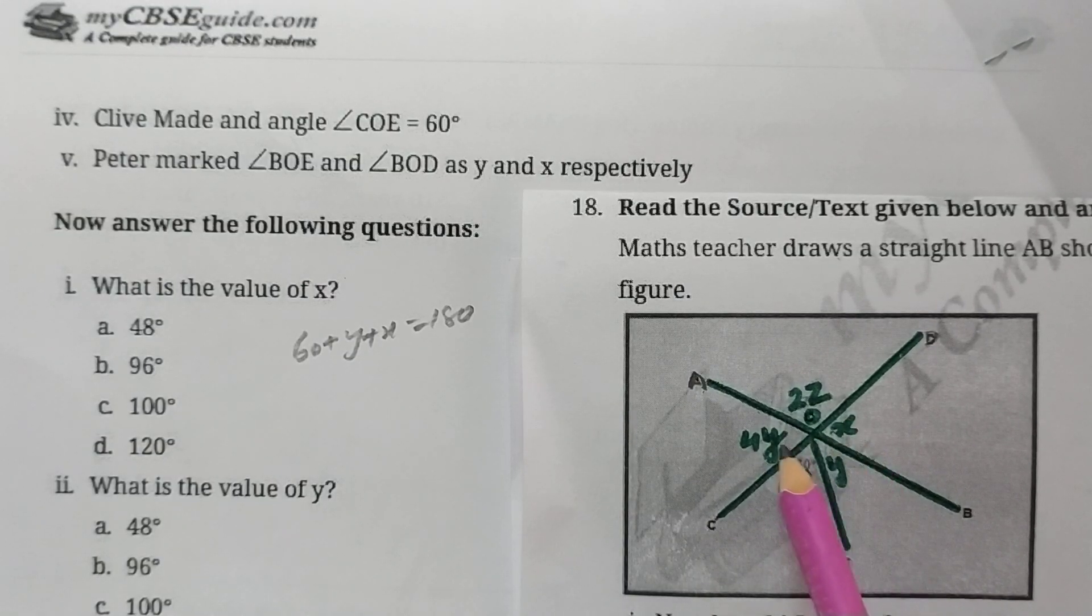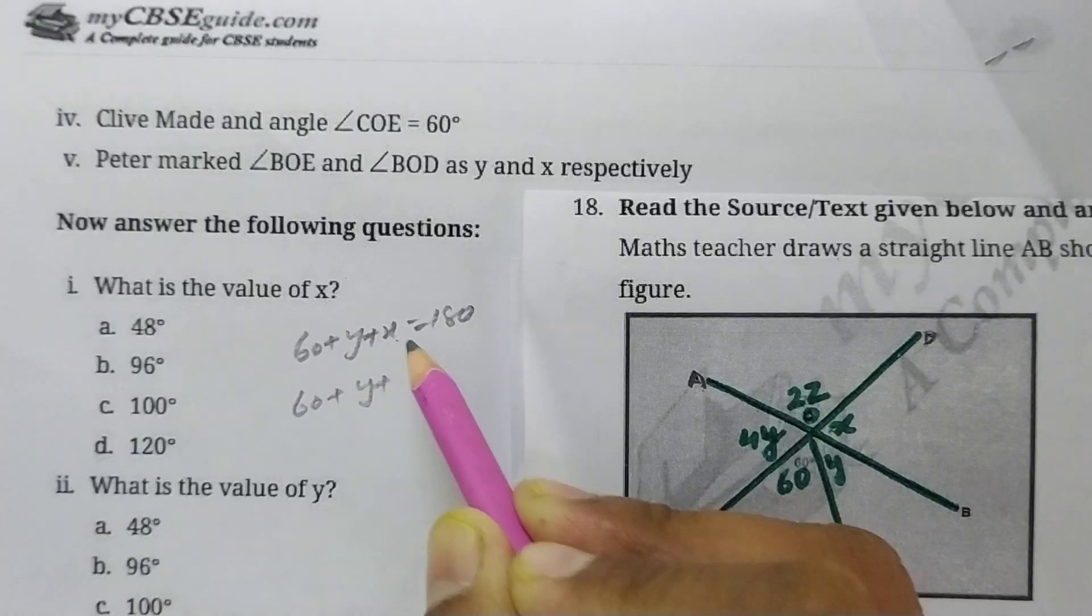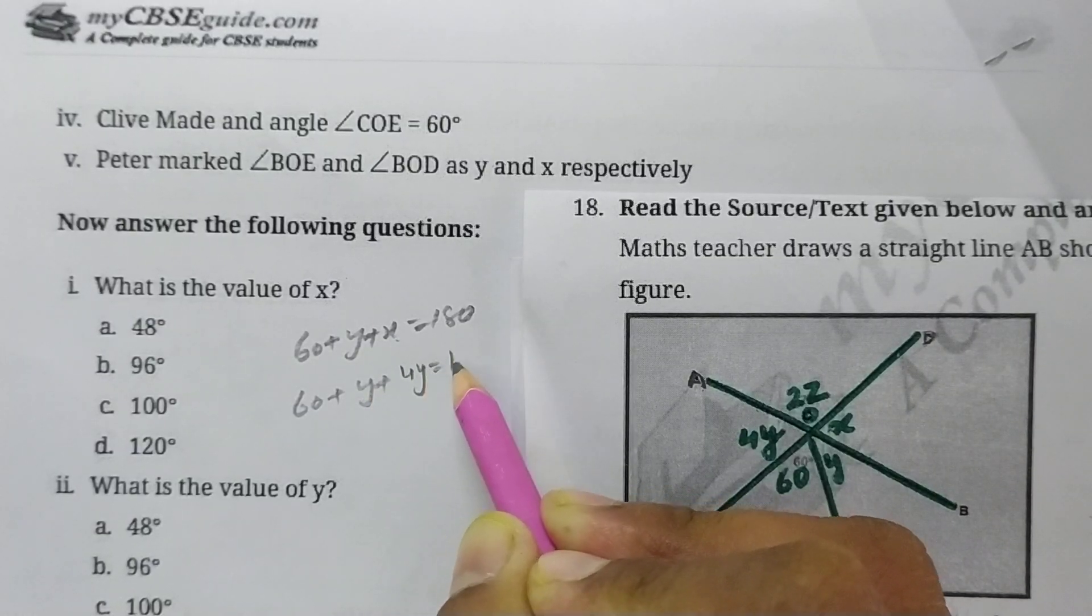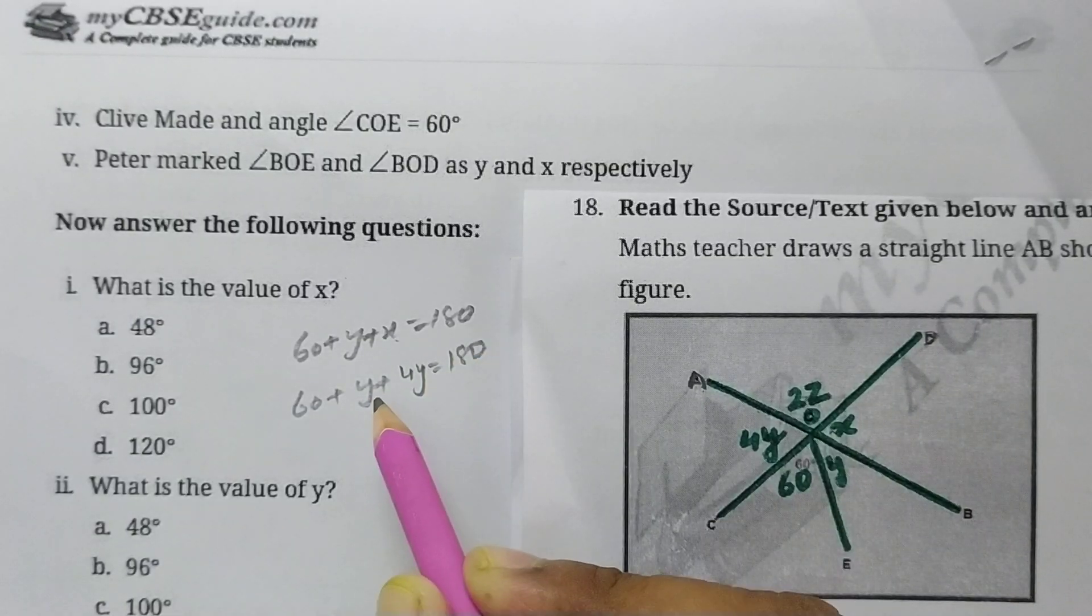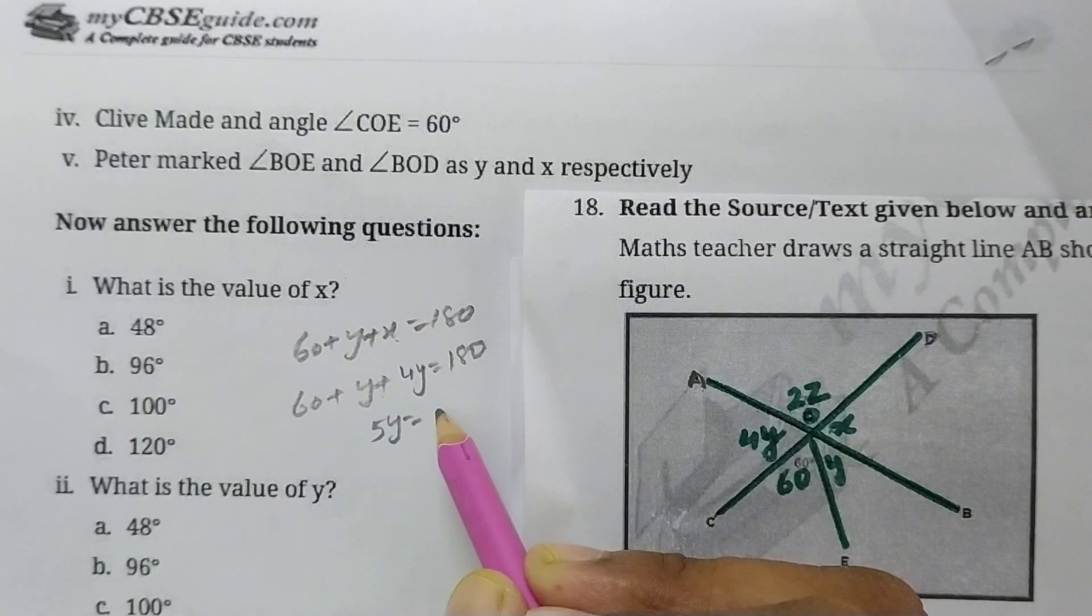Now if I put x here as 4y, because see here x and 4y are vertically opposite angles. They are both vertically opposite angles, so they will be equal. So instead of x, I will put 4y. So wherever x is coming, 60 plus y plus x, instead of x I put 4y, is equal to 180. So from here, see here, 5y is equal to, if I take 60 to the other side, 180 minus 60, it becomes 120. So y will be 24 degrees.